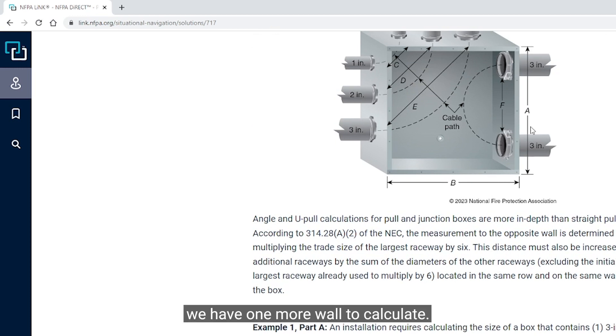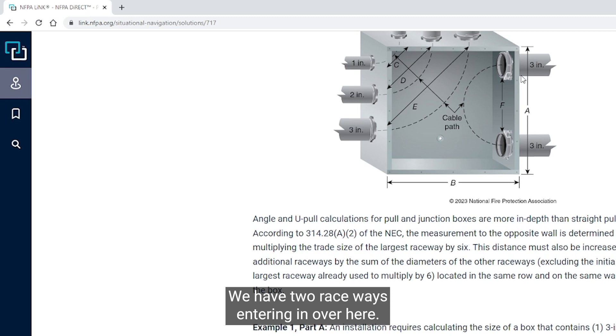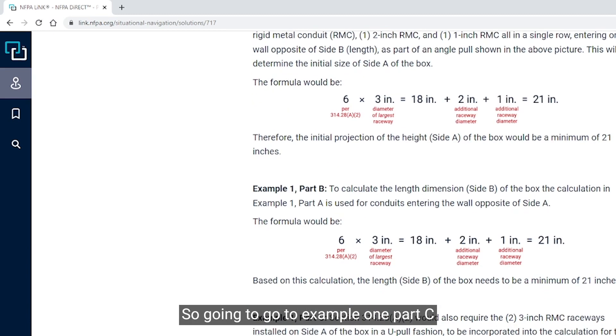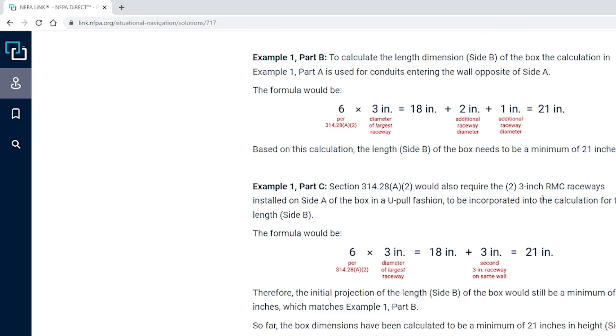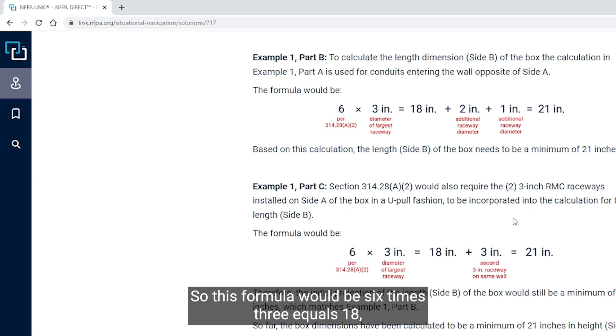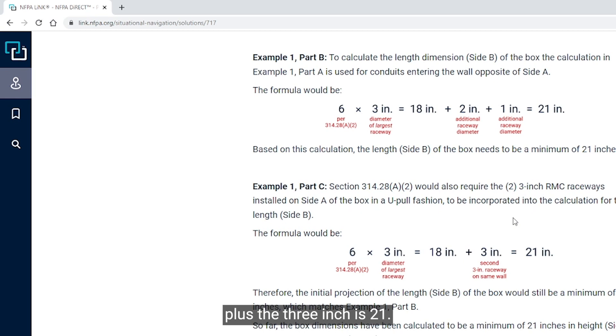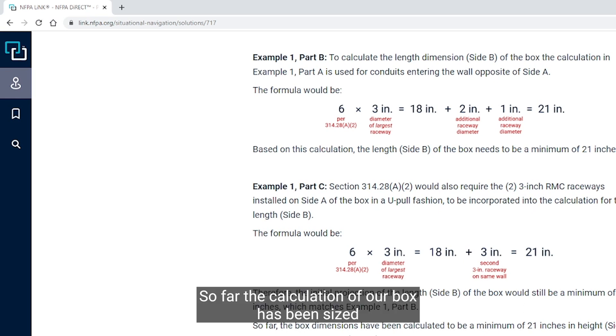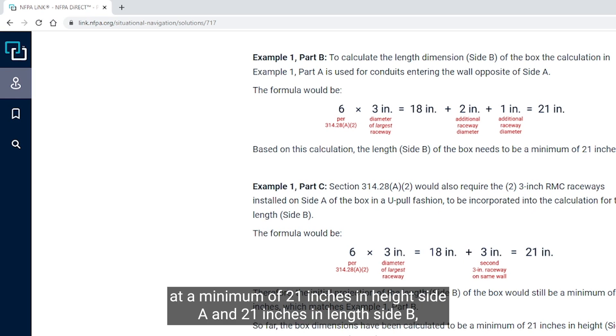To calculate the length dimension, which is side B of the box, the calculation in Example 1 Part A is going to be used for the conduits entering the wall opposite of side A. That, again, would be 6 times 3 equals 18 plus 2 plus 1 for 21 inches. So currently for side A and for side B, we have a 21 by 21. We have one more wall to calculate. We have two raceways entering in over here, so I'm going to go to Example 1, Part C.